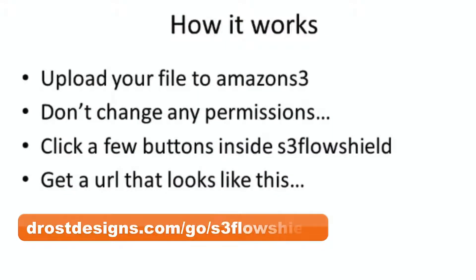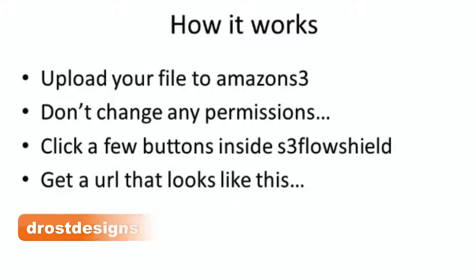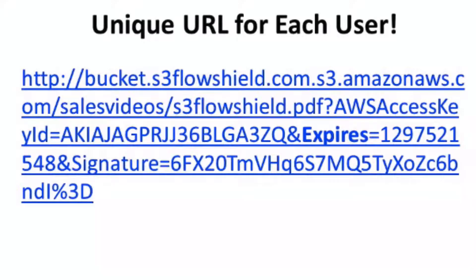Here's how it works. You upload your file to Amazon S3, you don't change any permissions, and you click a few buttons inside the S3 Flow Shield. You then get a URL that looks like this. As you can see, it expires after a certain amount of time, and if somebody else tries to use the same URL, they won't be able to access the file.